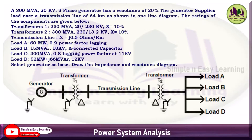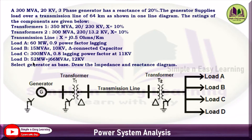Transformer 1 ratings: 350 MVA, 20/230 kV, x = 10%. Transformer 2: 300 MVA, 230/13.2 kV, x = 10%. Transmission line: x = j0.5 ohms per kilometer. We have four loads — Load A: 60 MW, 0.9 power factor; Load B: 15 MVAR, 10 kV, delta-connected capacitor; Load C: 300 MVA, 0.8 lagging power factor at 11 kV; Load D: 52 MW + j66 MVAR at 12 kV. Select generator as base value and draw the impedance and reactance diagram.